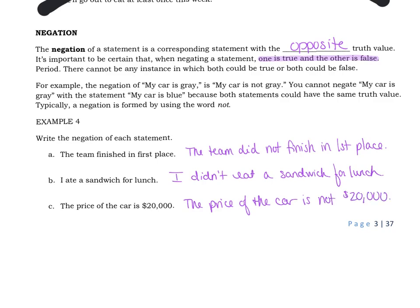And again, you can't even use like more or less because if you say the price of the car is $20,000 and that's not true, and you said the price of the car was more than $20,000, that could also not be true. The price of the car might be $17,000. So use the word not to represent a negation.